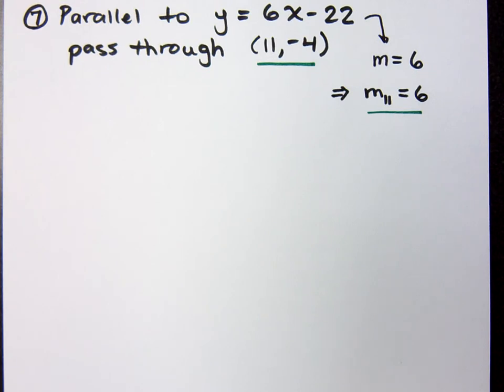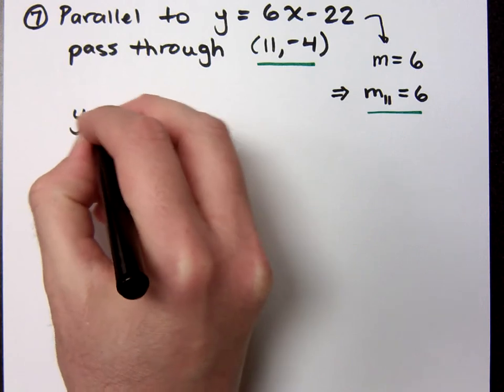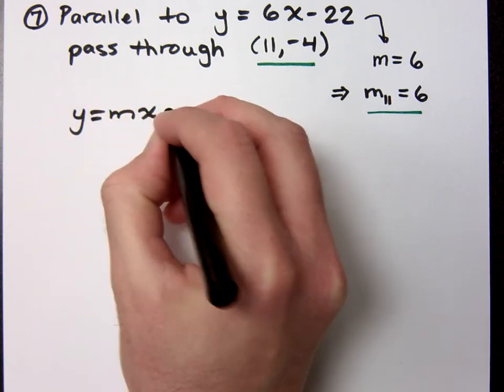Now, since the slope is an integer value, it should be easy enough for us to use the slope-intercept form. What's the slope-intercept form? y equals mx plus b. y equals mx plus b.